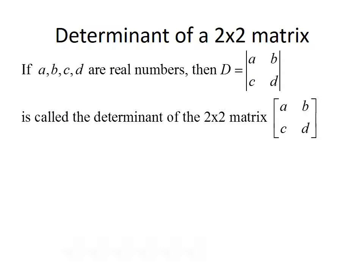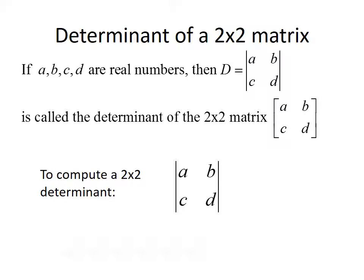If A, B, C, and D are all real numbers, then capital D equal to ABCD surrounded by vertical bars is called the determinant of the 2x2 matrix ABCD. The vertical bars on either side tell us we want to take the determinant. We compute it by multiplying diagonally: A times D, then subtract B times C. So the determinant of a 2x2 matrix takes the form AD minus BC.